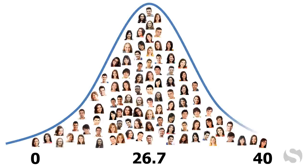By the way, this is a bell curve, named for the shape that a group typically makes — with a lot of members in the middle near the mean, and fewer members at either extreme. Standard scores indicate how a test taker performed relative to the members of the norming sample, or where that person would be in the bell curve.